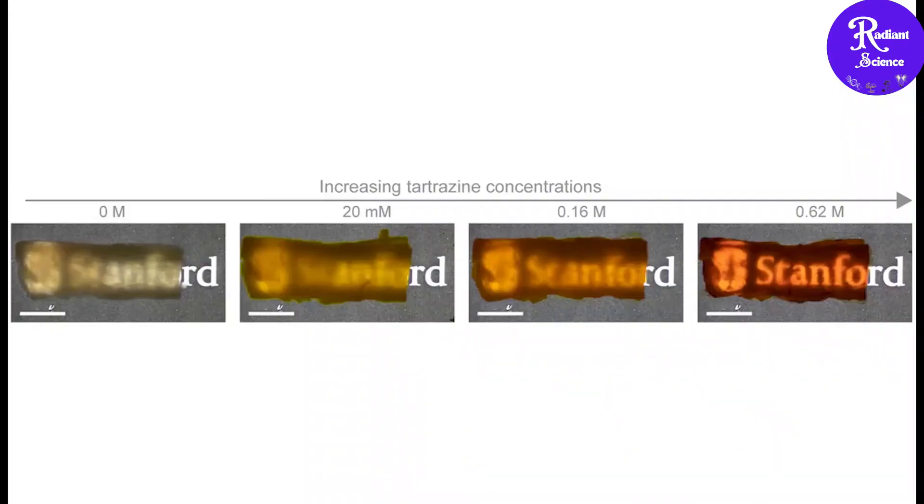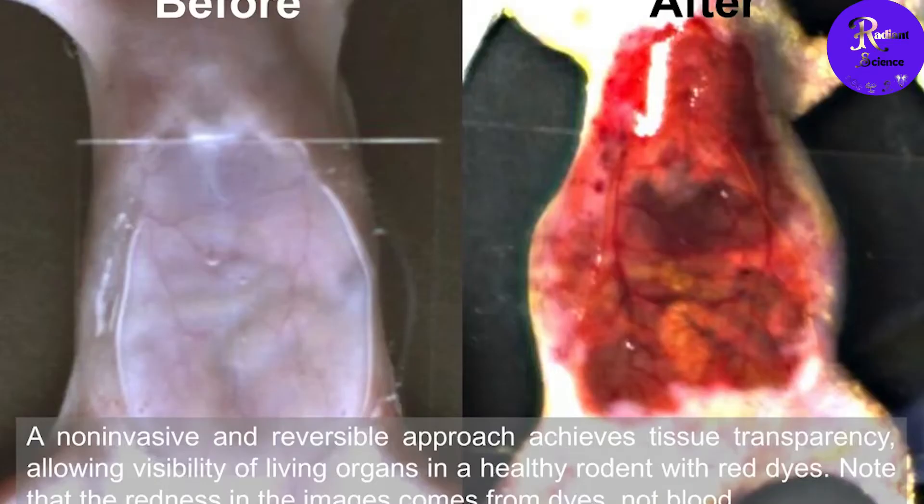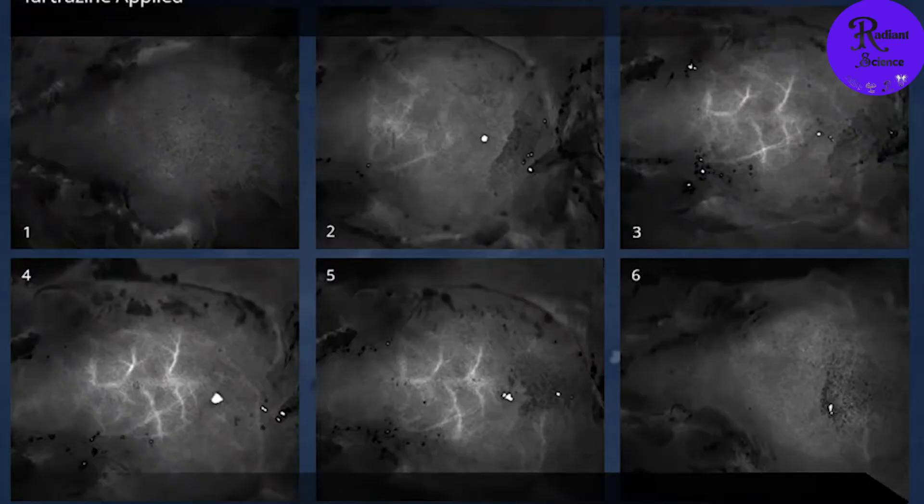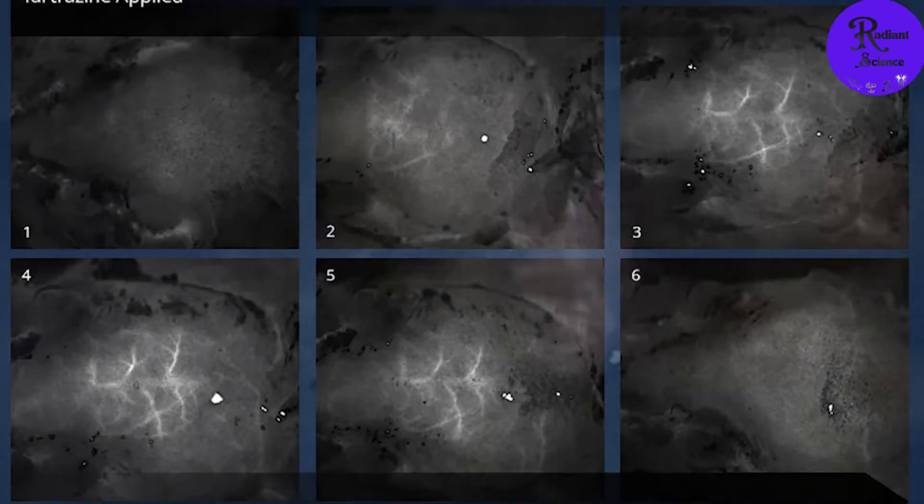It's a dye that's not just for adding color to food, but has an unusual property. When applied to the skin of a live mouse, it temporarily makes the skin see-through. This offers researchers a non-invasive method to observe what's happening under the surface without needing surgery or complex imaging equipment.